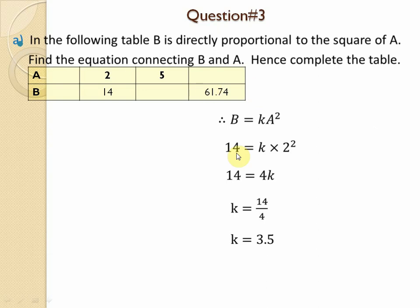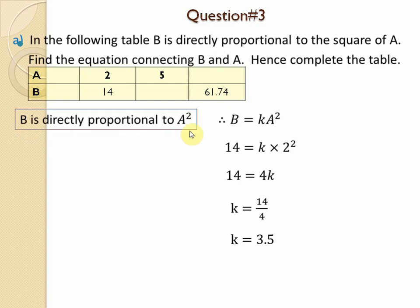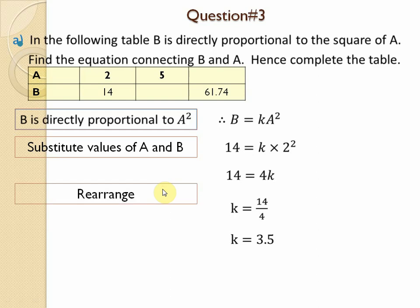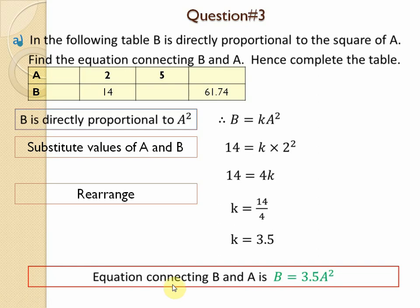Question number three: in the following table, b is directly proportional to a squared. Write the equation b = k × a². Substituting a = 2 and b = 14: since 2² = 4, we get k = 3.5. Rearranging, the equation connecting b and a is b = 3.5a².